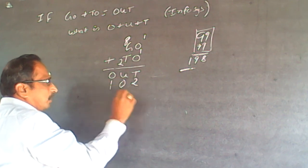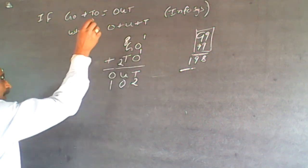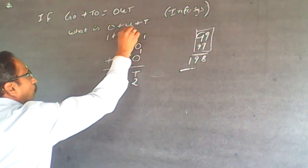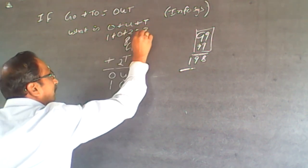So, O plus U plus T is what is being asked. 1 plus 0 plus 2 will be equal to 3. The answer is 3.